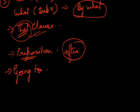If in an active sentence we use the phrase 'going to,' that should also be maintained in the passive sentence. 'She is going to read a book' becomes 'a book is going to be read by her.' The phrase 'going to' is kept in the passive sentence as well.